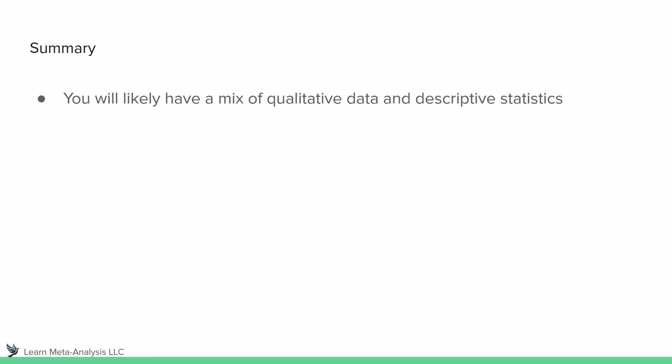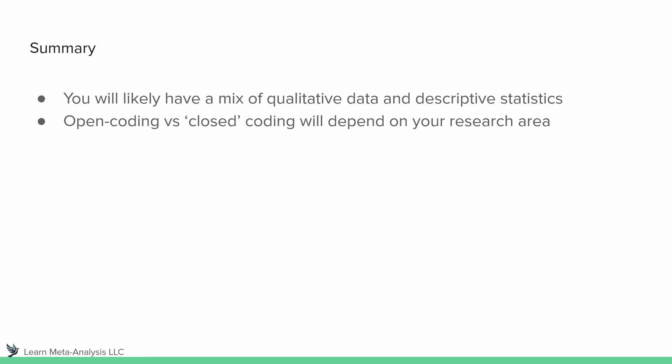Quick summary — I know this was a very short video. You're probably going to have some mixture of qualitative and descriptive statistics. Descriptive statistics describe the sample, but the meaningful information is really about the synthesis — what all of these studies mean together rather than what they mean individually. One question is whether this is open coding, closed coding, or both. As seen in the previous example, we used a combination: we started with a little closed coding because we already knew our categories from the framework, then used open coding to see what patterns emerged within each level. It really depends on your research questions and research area.